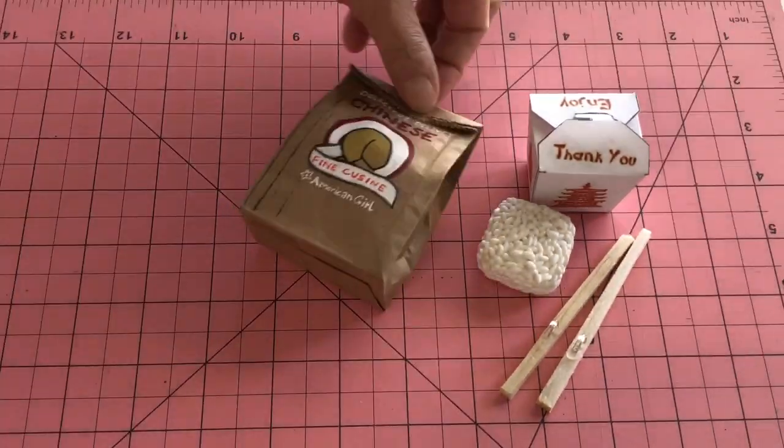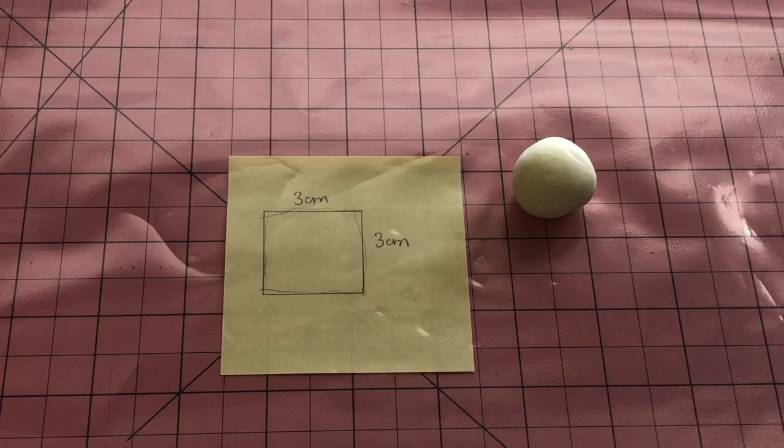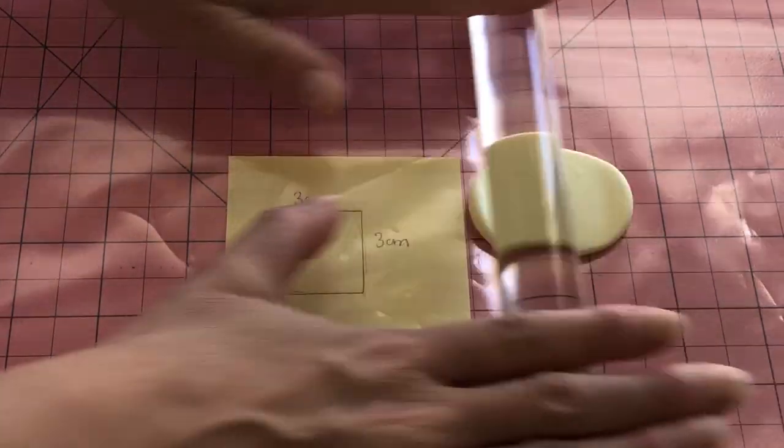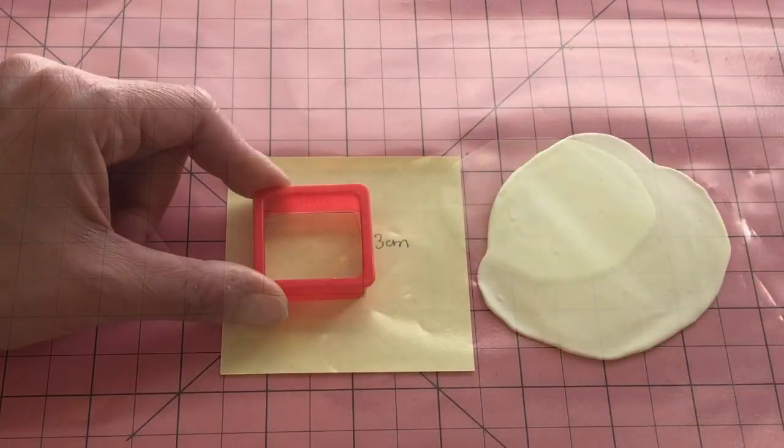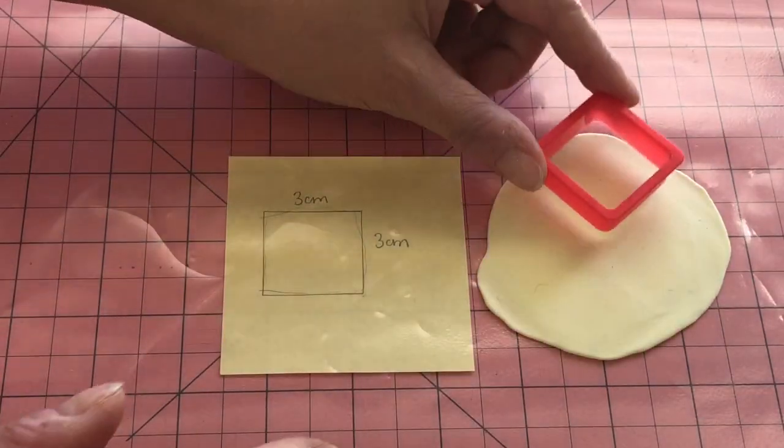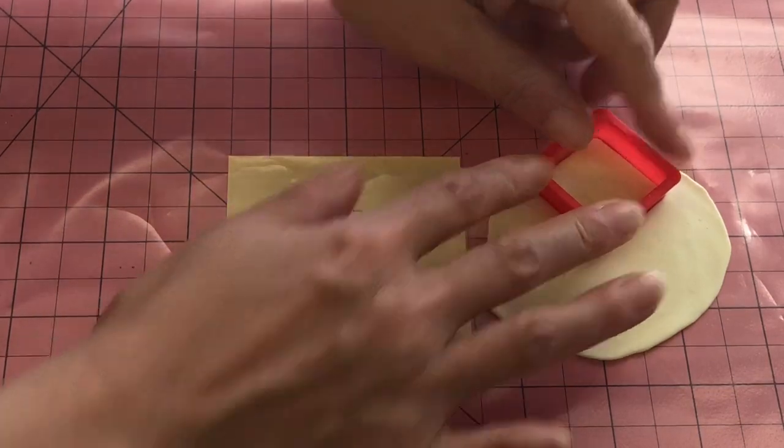Bonus craft! To make egg rolls, roll out a thin sheet of dough coloured air dry clay. Cut squares three by three centimetres. We used a play-doh cutting tool.